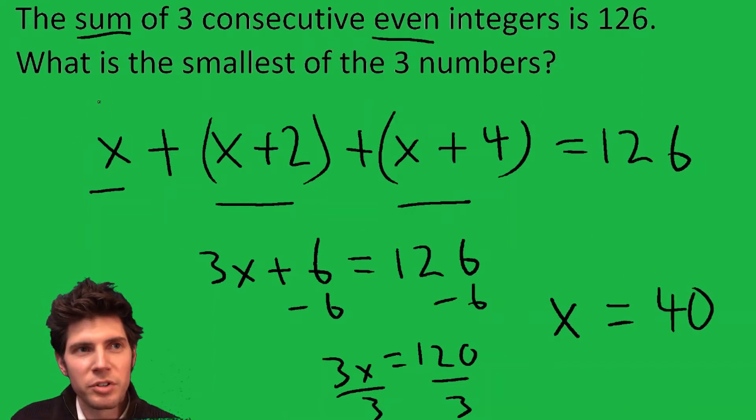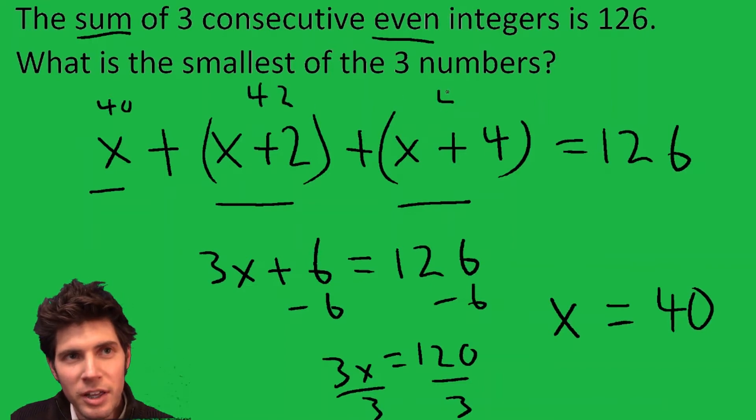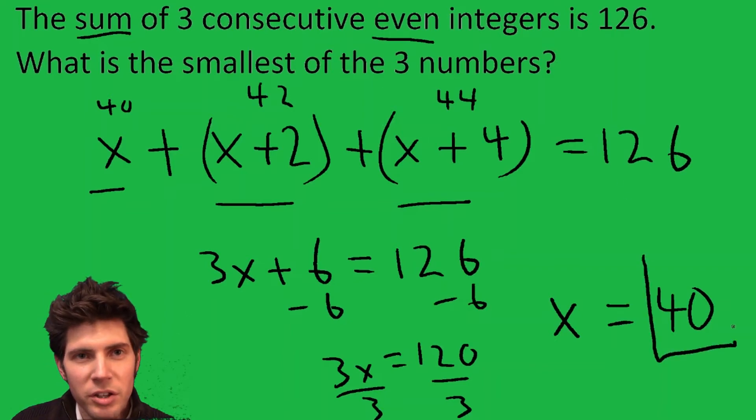So the first number is 40, the next one is 42, the next one's 44. Notice how there are three consecutive even integers, and when we add them we get 126. So the smallest of them is 40.